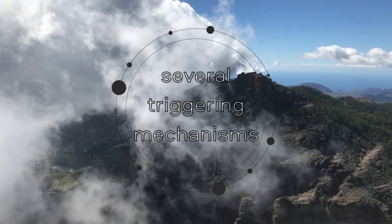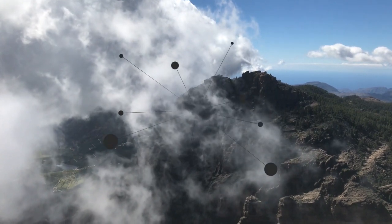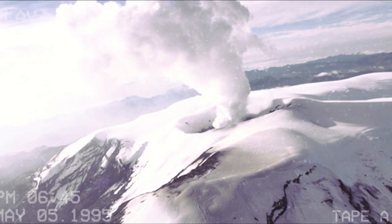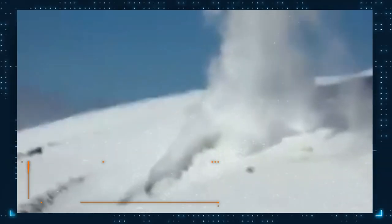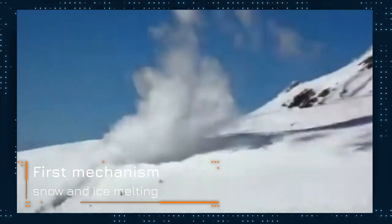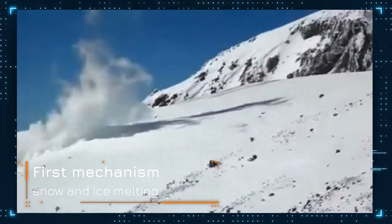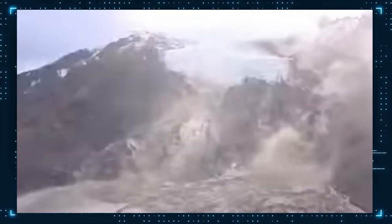There are several triggering mechanisms that lead to a lahar. The most typical cause is the melting of snow and ice on the summits of high volcanoes. Due to magma or hot pyroclastic flows, lava erupts from open vents and mixes with wet soil, mud, and snow on the volcano slope to form a very viscous, high-energy lahar. The higher up the volcano, the greater the gravitational energy and therefore the more destructive potential the lahar will have.